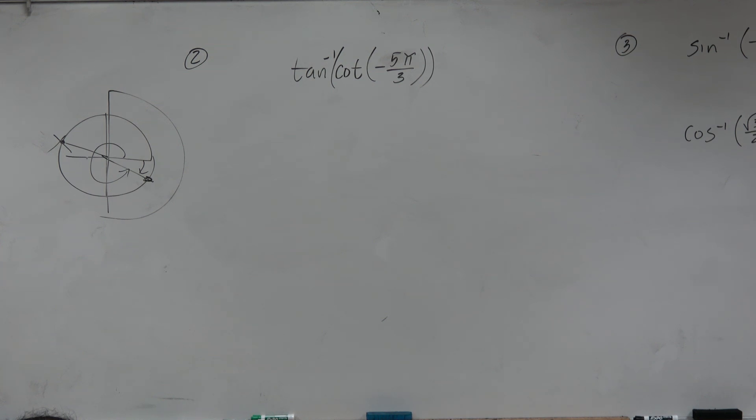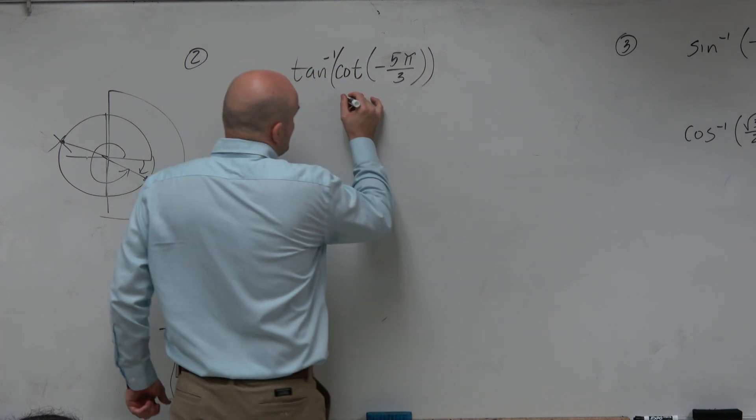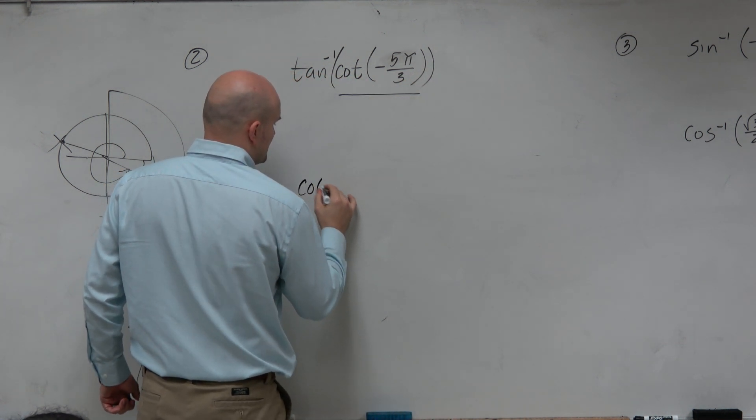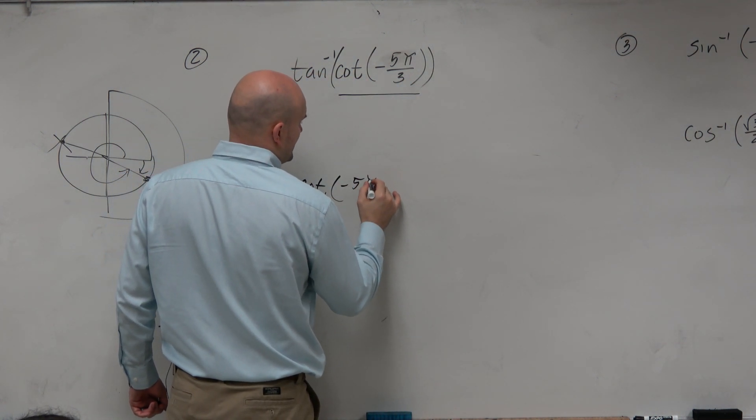If we just focus from the inside out, we'd say, let's figure out what is the cotangent of negative 5 pi over 3.